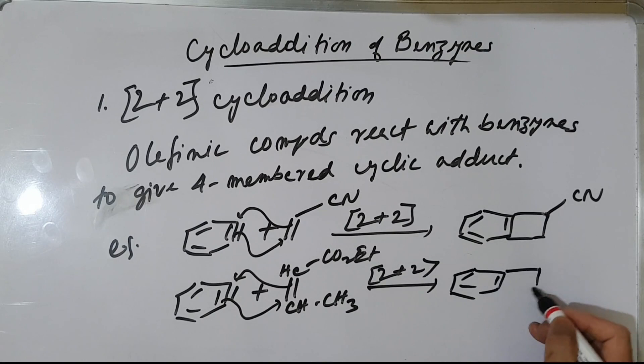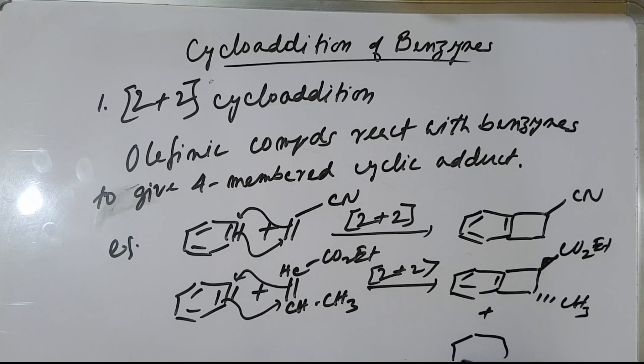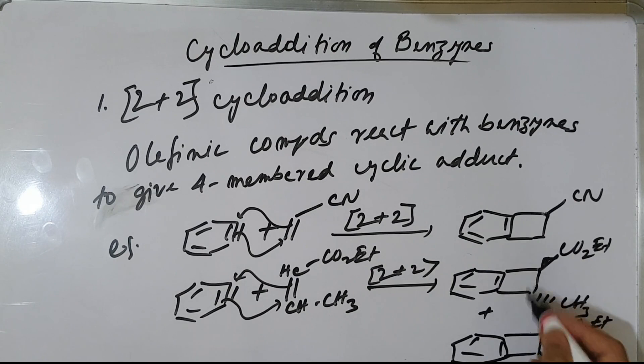Here we have 2 types of products. One is CO2Et and trans-CH, and you can have another compound — C is CO2Et, C is CH. So you can have 2 types of products, depending on the nature of the reaction conditions.